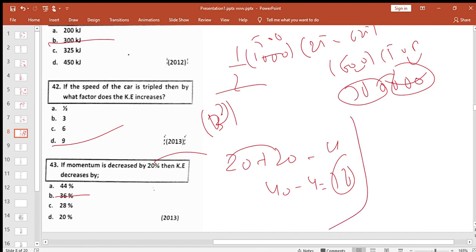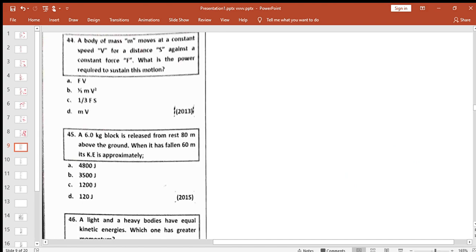Problem 43: If momentum is decreased by 20%, then kinetic energy is decreased by what percent? One minus 0.2 equals 0.8. 0.8 squared equals 0.64. One minus 0.64 equals 0.36, which is 36 percent.